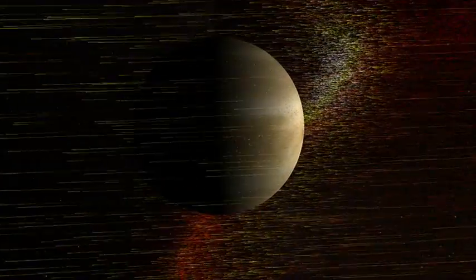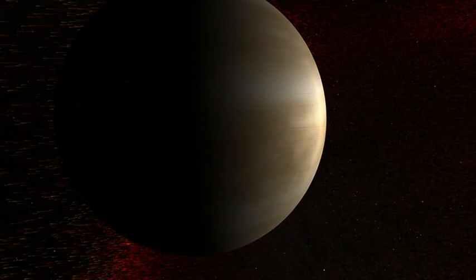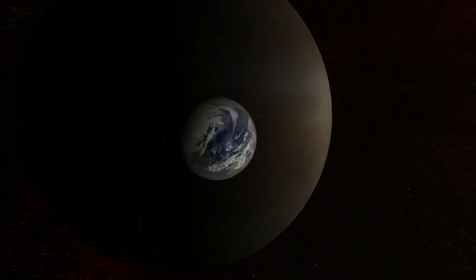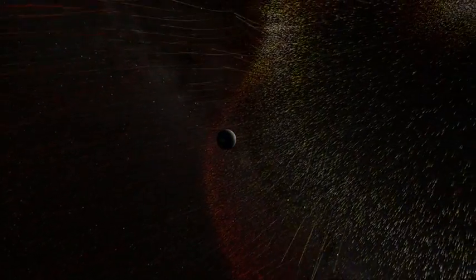What's left is a witch's brew of noxious chemicals, including thick, sulfurous clouds. How has Earth avoided the grim fate of Venus? We can see the answer as the solar storm approaches Earth.